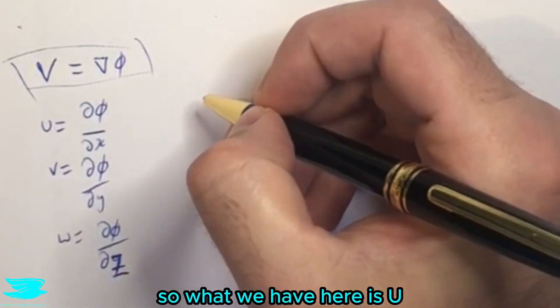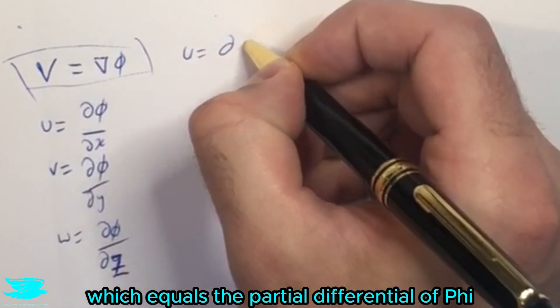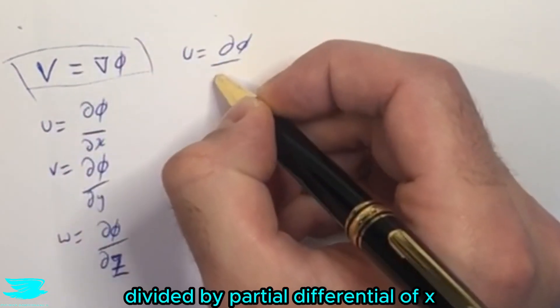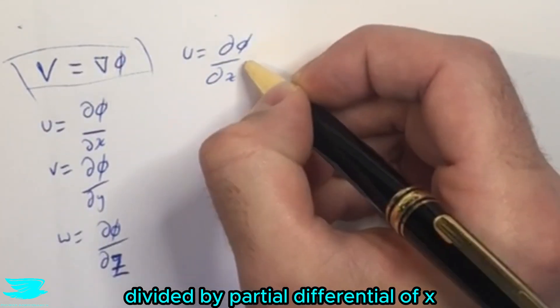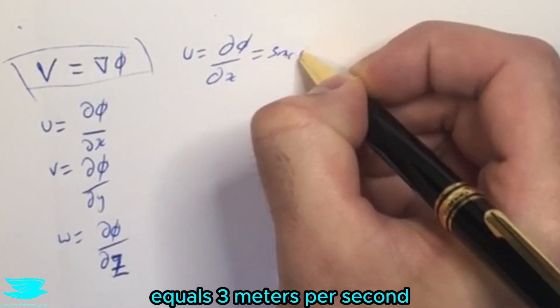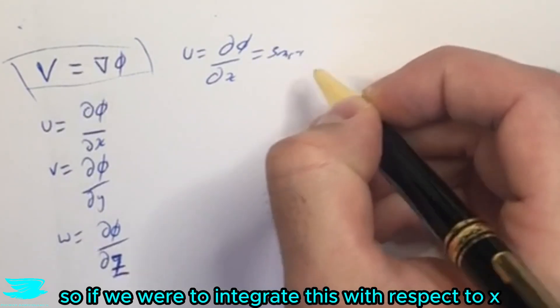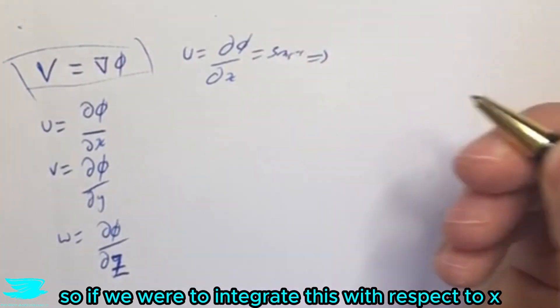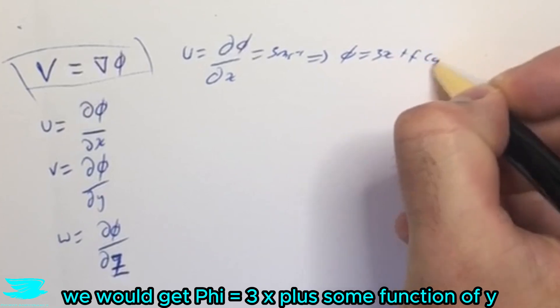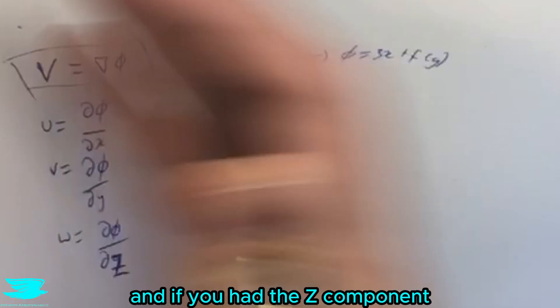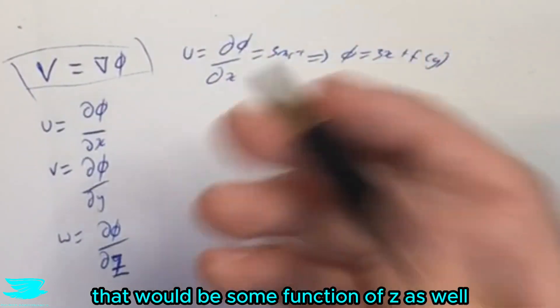So what we have here is u, which equals the partial differential of phi divided by partial differential of x, equals three meters per second. So if we were to integrate this with respect to x we would get phi equals 3x plus some function of y, and if you had the z component that would be some function of z as well, but we don't need that because it's just two dimensions.